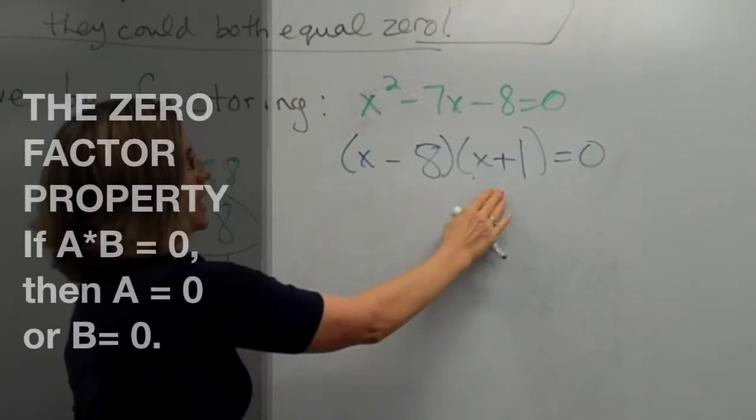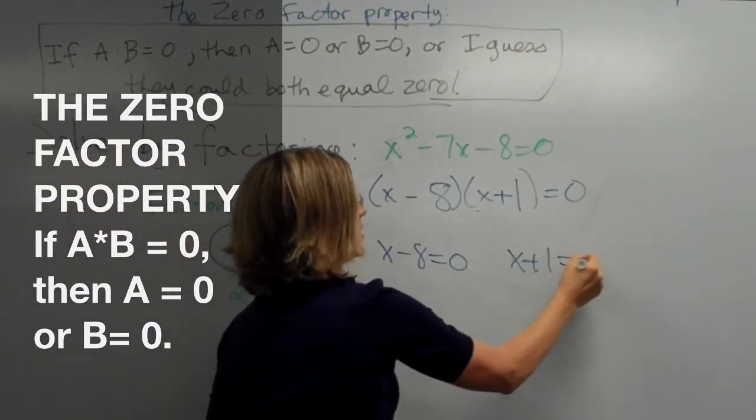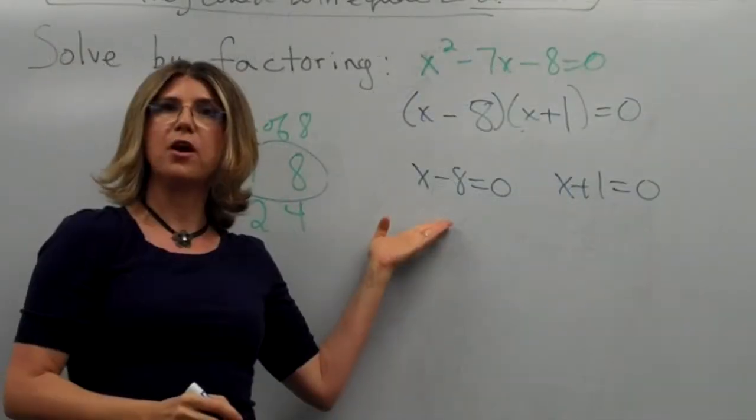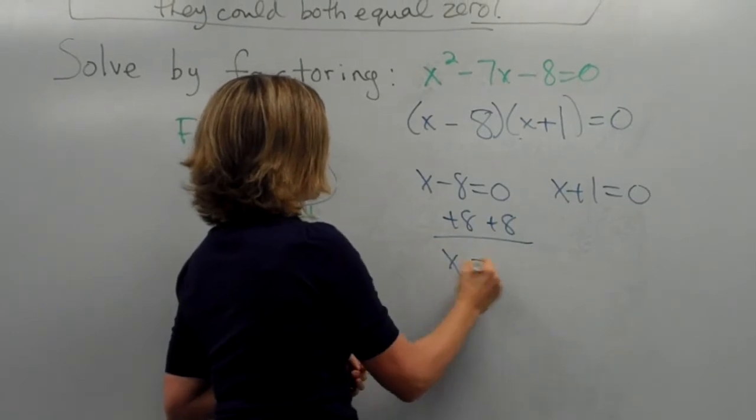If x minus eight times x plus one is zero, then either x minus eight is zero, or x plus one is zero. So, how do we solve for x here? We add eight to both sides. So, x is eight.